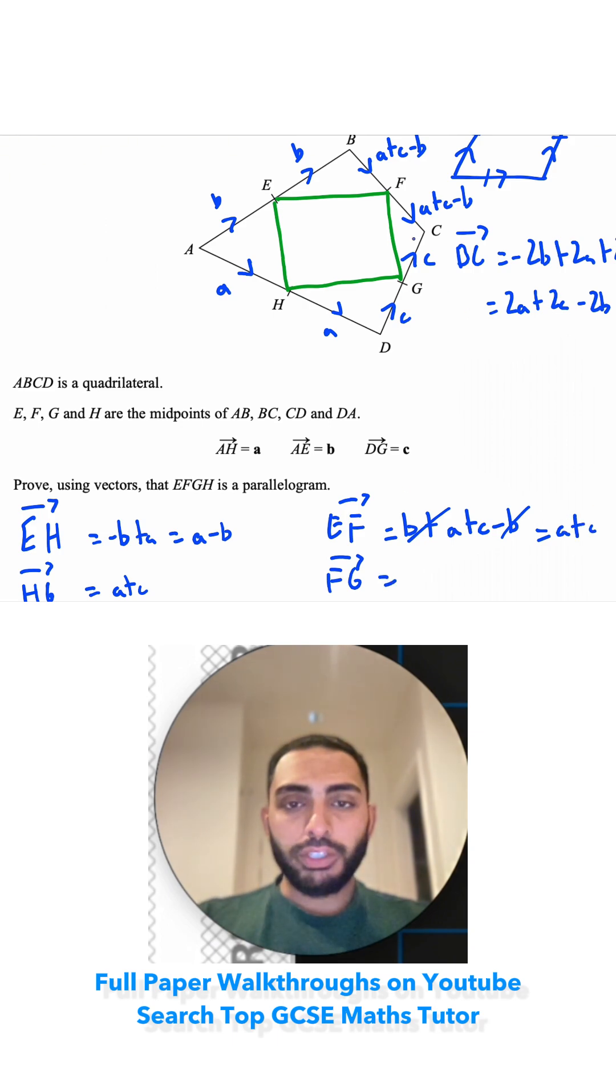FG, we're going F to G, so we're doing A plus C minus B. Then we're going C to G, going backwards, so it's minus C. These C's will also cancel out, leaving A minus B.